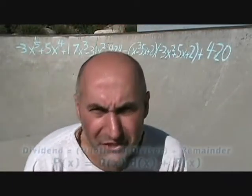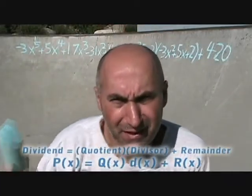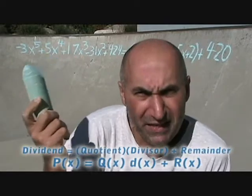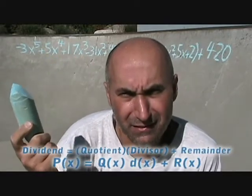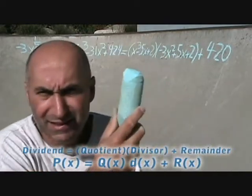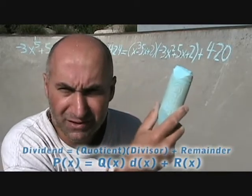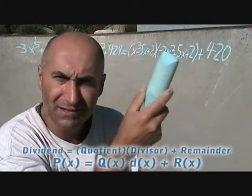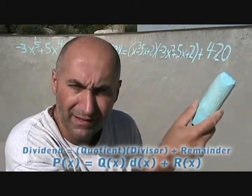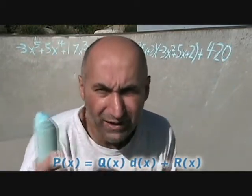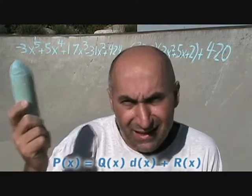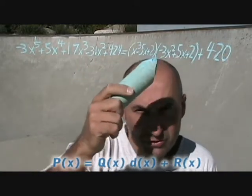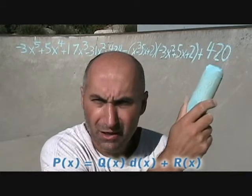Our division statement is our big polynomial — our P of X — is equal to the quotient times the divisor plus the remainder. P of X is equal to Q of X times D of X plus R of X. This means this polynomial is equal to this polynomial times this polynomial plus 420.